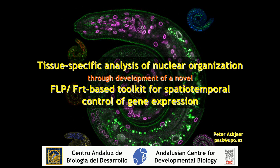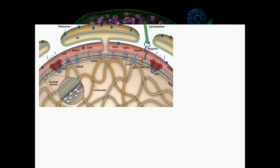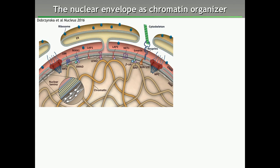I'll talk about two things. One is how we have identified a nuclear envelope protein called Emerin and its role in the nervous system in C. elegans. The nuclear envelope is being recognized as an important organelle for chromatin inside the nucleus, and mutations in nuclear envelope proteins are known to cause a wide variety of human diseases, many of which are known as laminopathies.